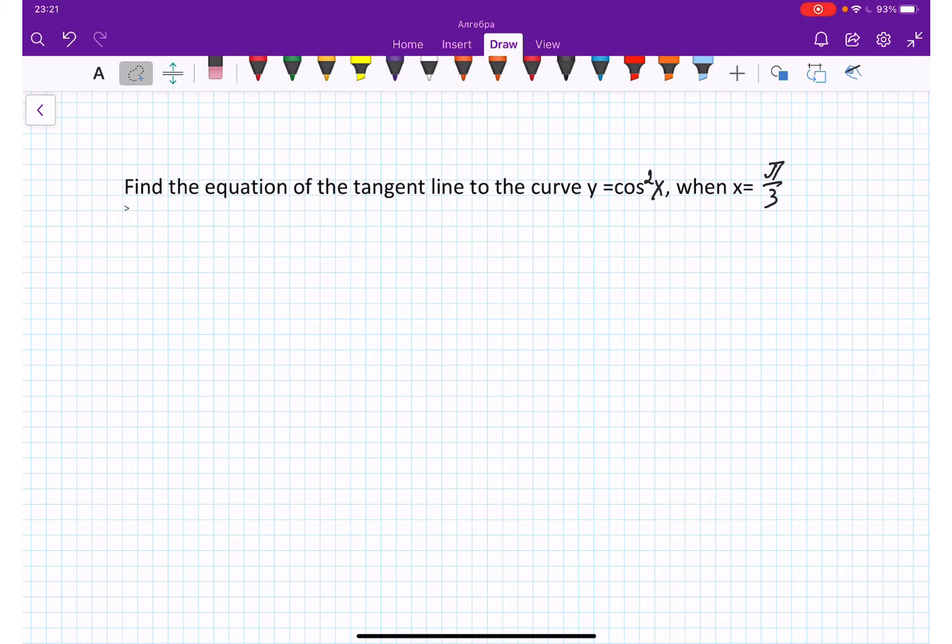To find the equation of the tangent line, we start taking the derivative of y using chain rule. So y equals cosine squared x, where x equals pi over 3. Let's take the derivative. Y prime equals 2 cosine x times negative sine x. Chain rule, which equals negative 2 cosine x sine x.